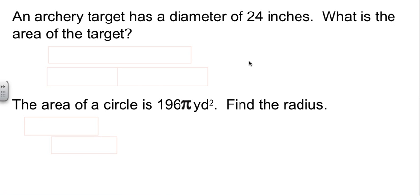So let's deal with a couple of circle problems. We have an archery target with a diameter of 24 inches. The question is, what's the area of the target? Well, before we can do the area, we need to know what the radius is. If the diameter is 24, then the radius must be 12.